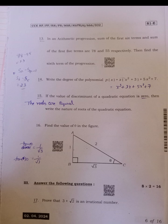Fifteenth, if the value of the discriminant of a quadratic equation is zero, then write the nature of the roots of the quadratic equation. The roots are equal roots.